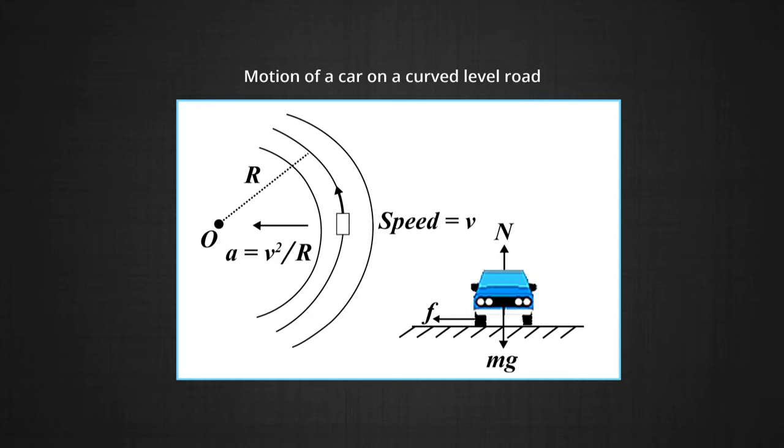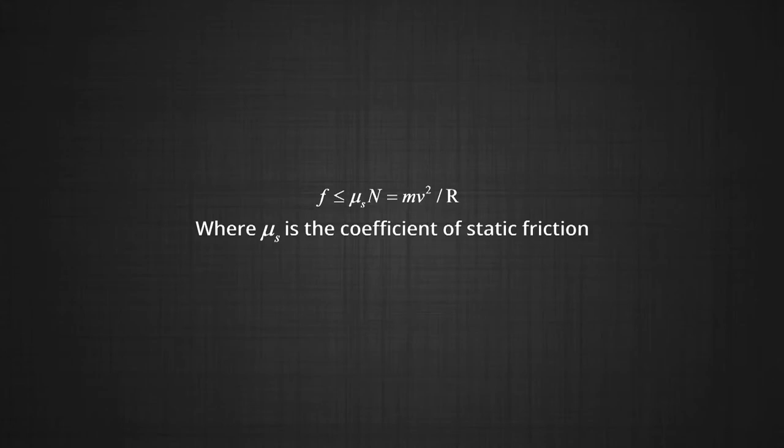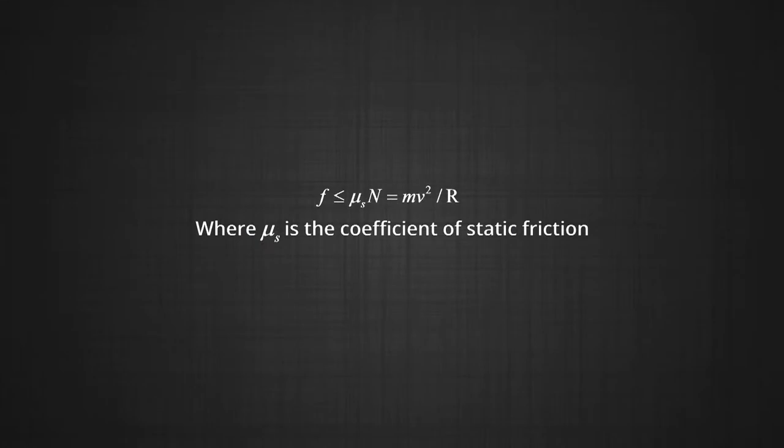The centripetal force for circular motion of the car is provided by the frictional force between the tyres of the car and the road. Note that it is the static friction that provides the centripetal acceleration. Static friction opposes the impending motion of the car moving away from the circle. From the law of limiting friction, f is less than or equal to μs times N, meaning static friction must be less than or equal to μs times N, which equals mv² over r.